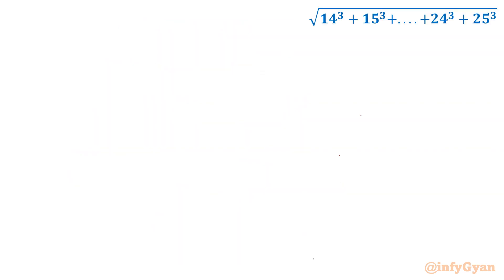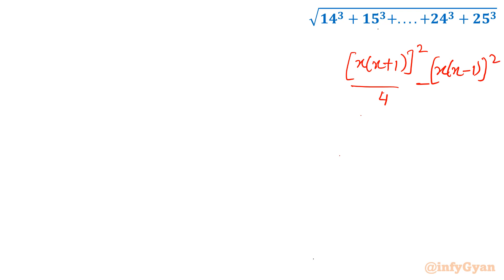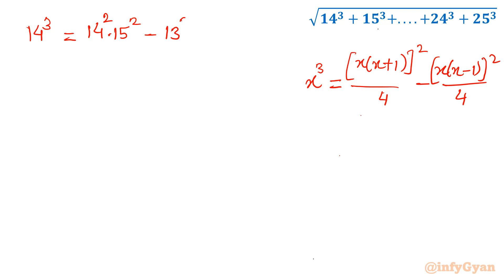Let us apply the identity. The identity is: x³ = x(x+1)² / 4 − x(x−1)² / 4. Let us begin with 14³. We write 14³ as: 14 times 15² over 4 minus 14 times 13² over 4.